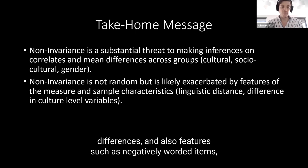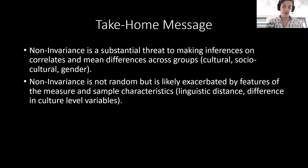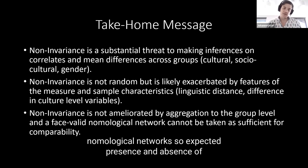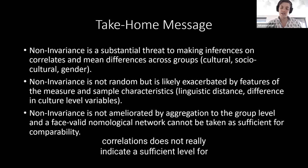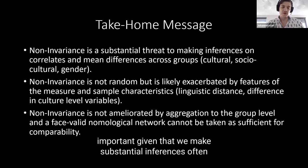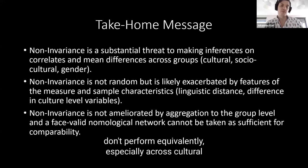Non-invariance is not really ameliorated by aggregation to the group level, and face valid nomological networks, so expected presence and absence of correlations, does not really indicate a sufficient level for comparability of scales. In a health context, that's quite important given that we make substantial inferences, often also about individuals from measures. If those measures don't perform equivalently, especially across cultural groups, we can make wrong inferences and prescribe wrong treatment and run non-helpful interventions.